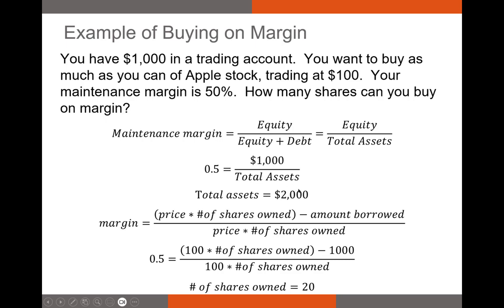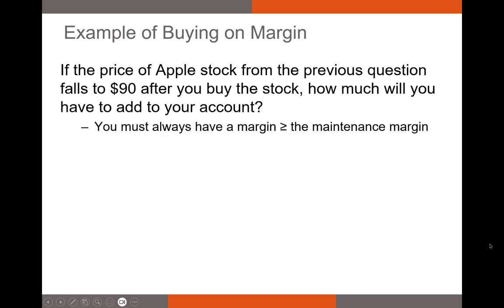With $2,000 in total assets and $1,000 in equity, that means $1,000 must be debt. So we take our $1,000 of debt, plug that into the basic maintenance margin equation, and knowing the share price is $100, we solve: $100 times shares owned minus $1,000, divided by $100 times shares owned, and we solve for the number of shares owned.